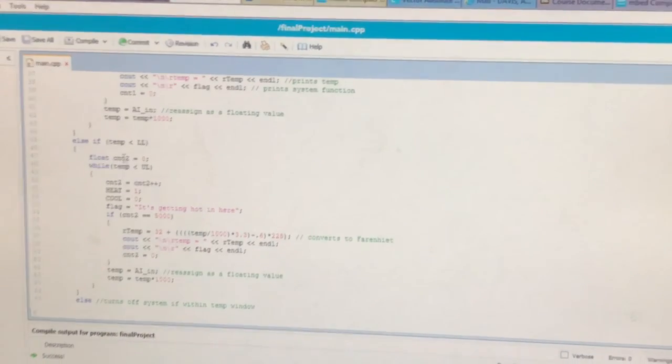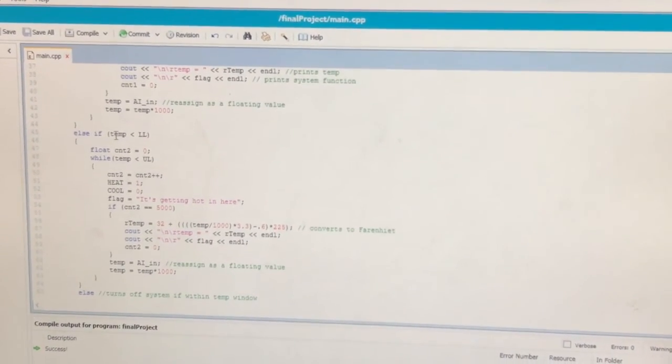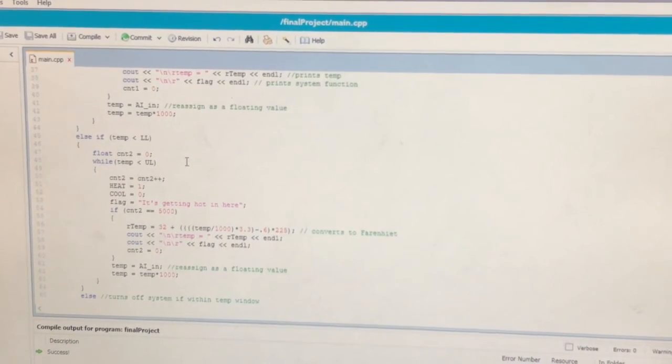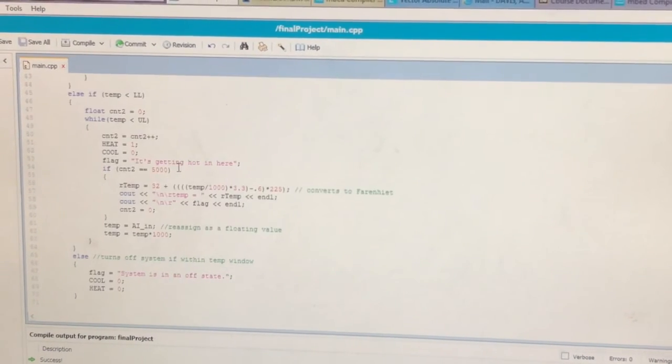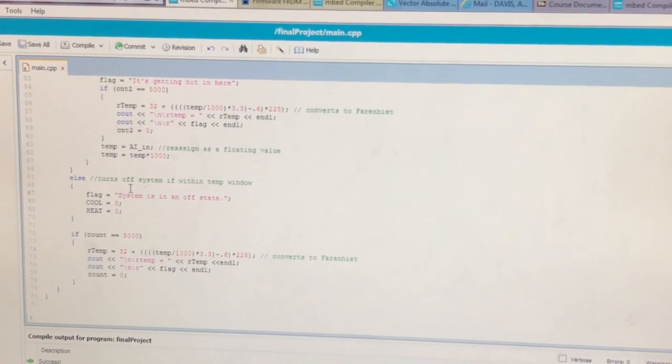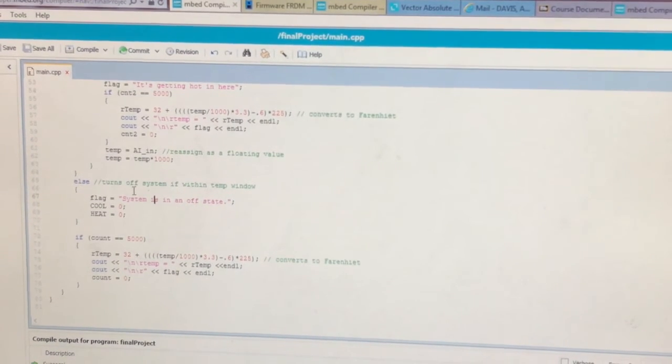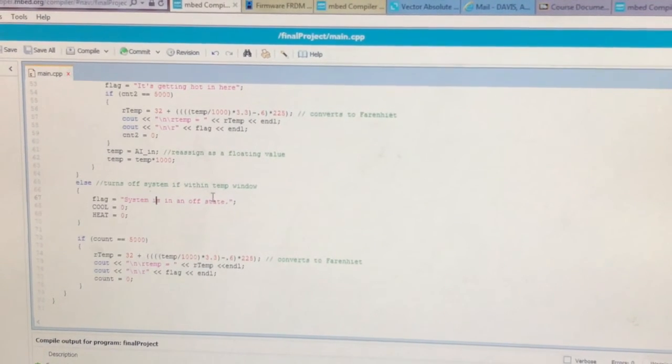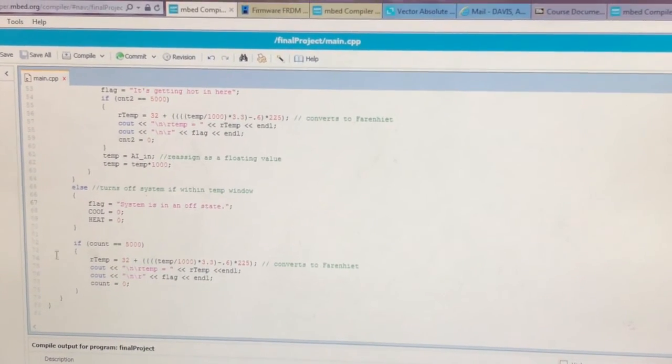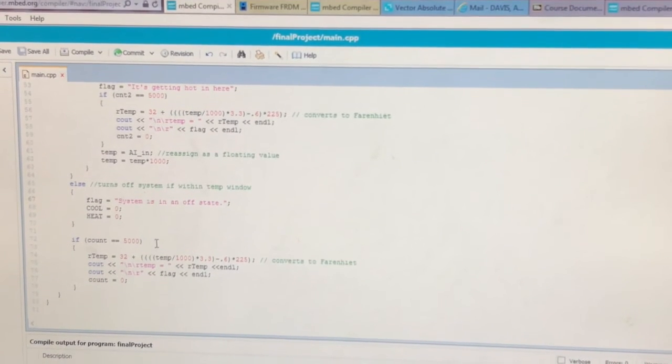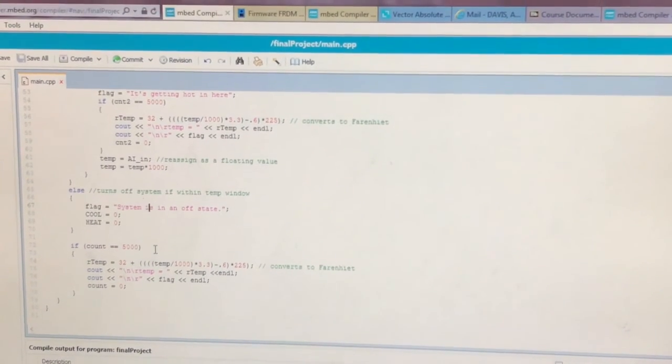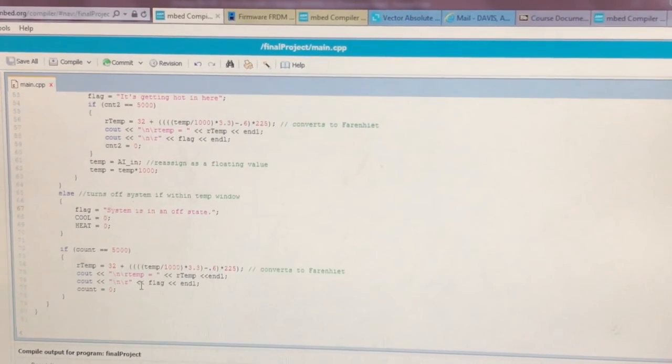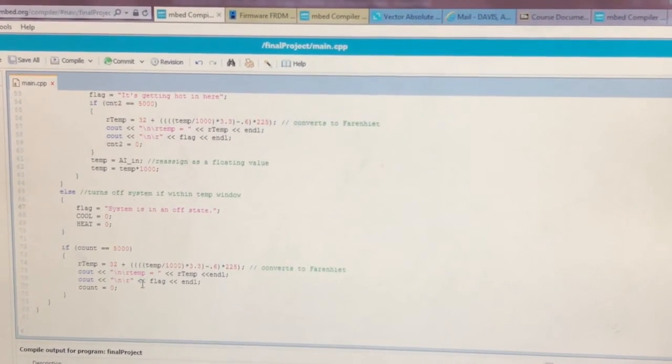We do the same thing for the temperature when it is lower than the lower limit. The only difference is we are heating instead of cooling. When the temperature is within our temperature window values the whole system turns off and we just set the flag to the system as in an off state. Lastly we have an if statement that when the count of the entire system reaches 5,000 we print out the data that is being read in at a specific moment.